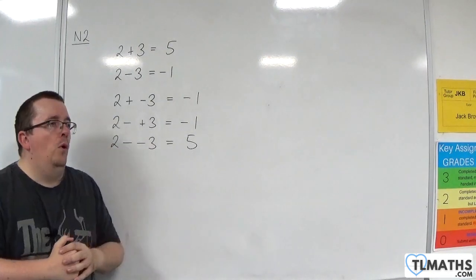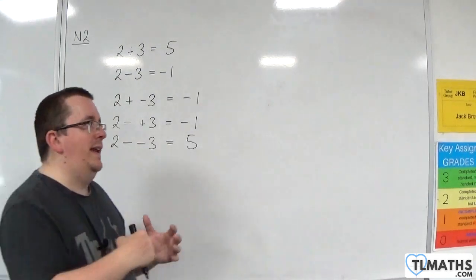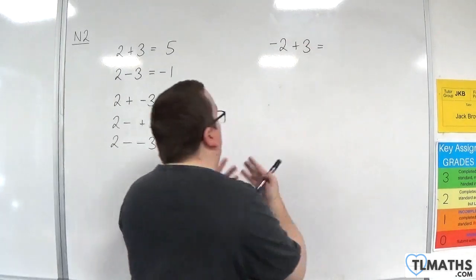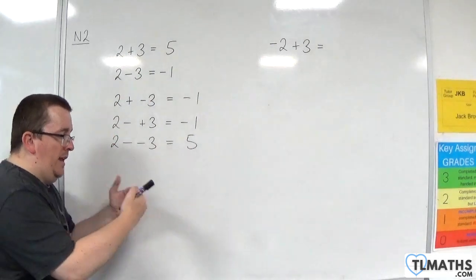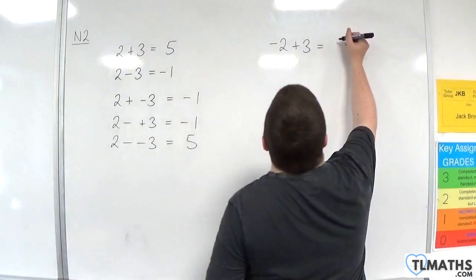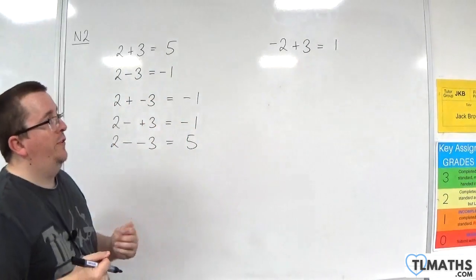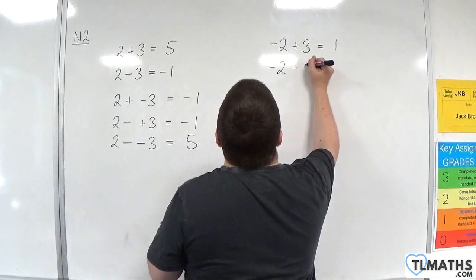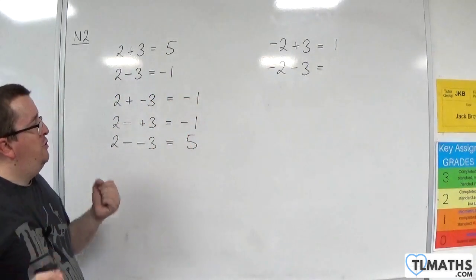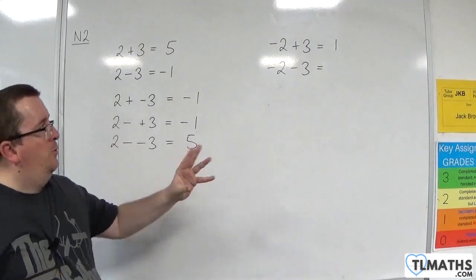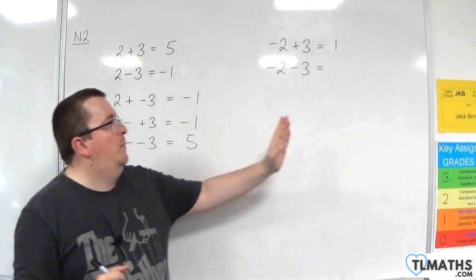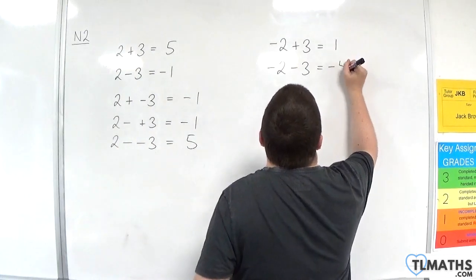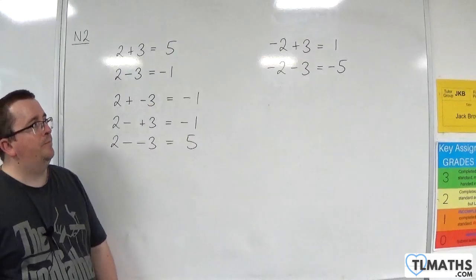What if I start making the 2 negative? If I had minus 2 plus 3 — I'm at minus 2 degrees centigrade and I add 3, it gets hotter, so I'd get to 1 degree centigrade. What about minus 2 take away 3? I've got two minuses, but they are not next to one another — I'm at minus 2 and I need to go 3 units to the left, so I end up at minus 5.